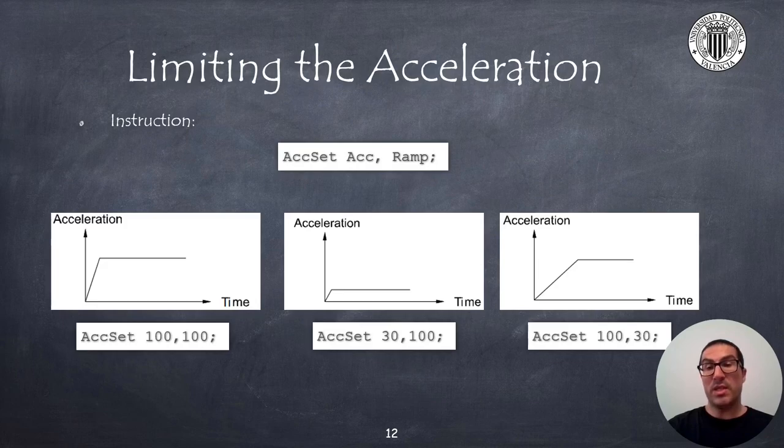In the other two examples, the value of the maximum acceleration is limited on the one hand, but not the slope, so that the change in the acceleration is fast. While in the last example, the acceleration slope is limited, but not the maximum value.